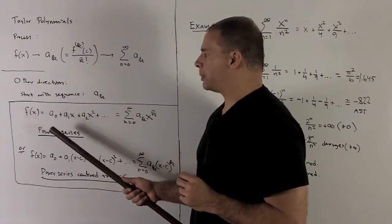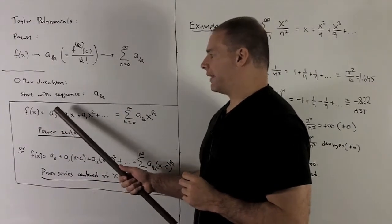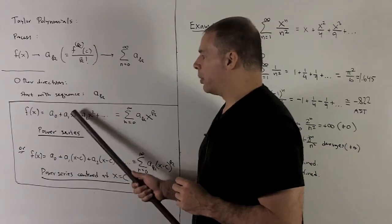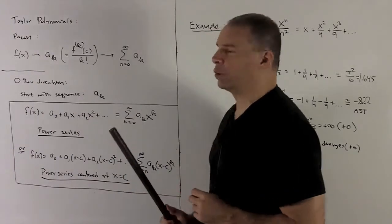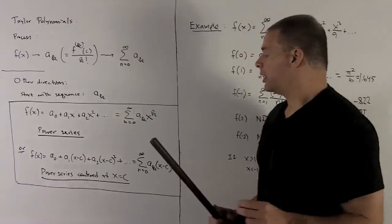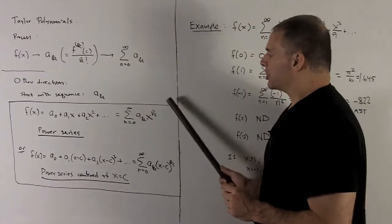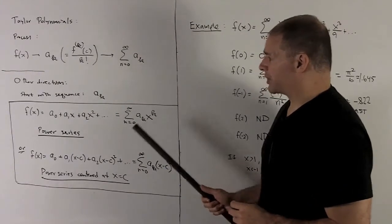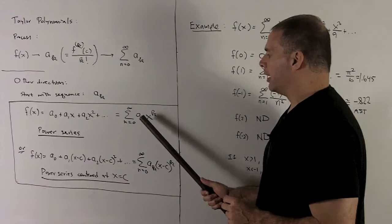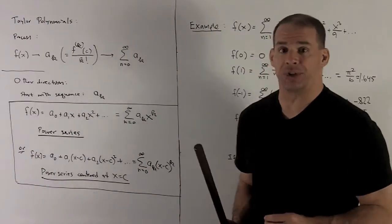So the natural way you would make a function out of this would be, we'll let f of x be equal to, we have a_0, a_1, I'm going to put x to the one power, a_2, I'll put x squared, a_3, I'll put x cubed, and so on. So this is going to be a series where each value of this function is going to depend on whether you can evaluate your series or not.